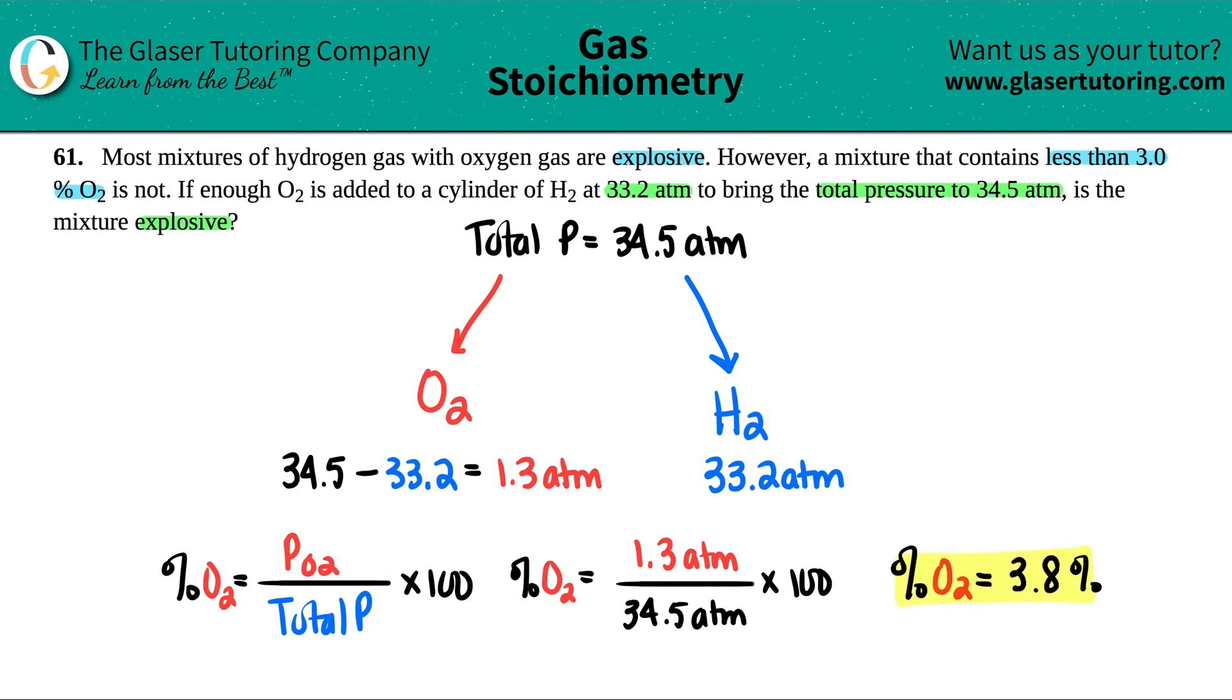Okay. So this is the percentage of our oxygen in our mixture. So would this be explosive? Is the mixture explosive? Well, the key is that a mixture that's less than 3% oxygen is not. But our mixture is 3.8%. That's over. So yeah, this is going to be explosive.